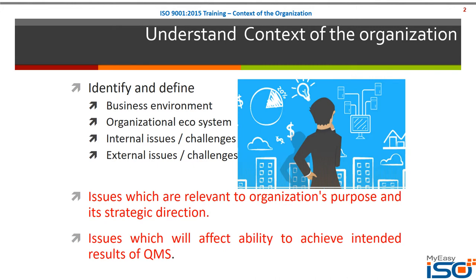Let's talk about context of the organization — what does this phrase mean? To make it simple, I want you to forget about ISO 9001 and forget about implementing a quality management system standard. Just think about your business, your organization. Identify what kind of business you are in, who your competitors are, what challenges your business is facing, what kind of operating environment you carry out your business in, and what the organizational ecosystem and competitive landscape look like. Ask all these questions to yourself and try to understand who you are, what you do, and what issues you face.